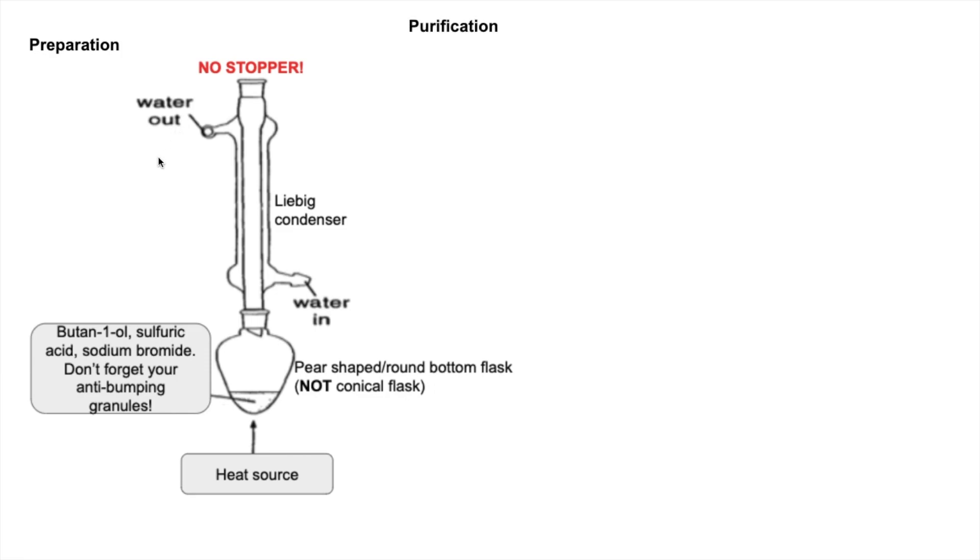For the purification, the student obtains a reaction mixture containing an organic layer with density 1.27 grams per cubic centimeter, and an aqueous layer with density 1 gram per cubic centimeter. At the end of the hour, we've got this reaction mixture. The other information is that 1-bromobutane is an organic liquid with a boiling point of 102 degrees C.